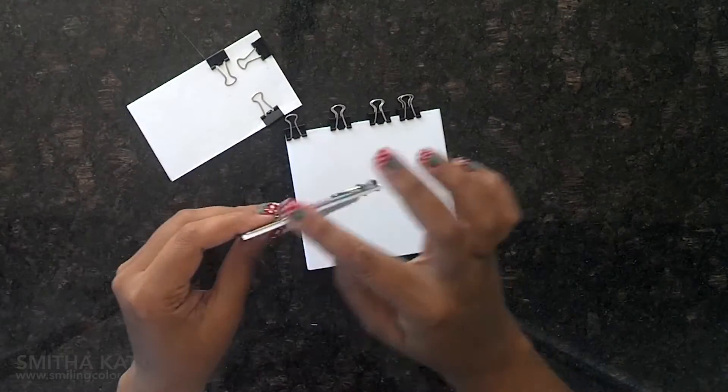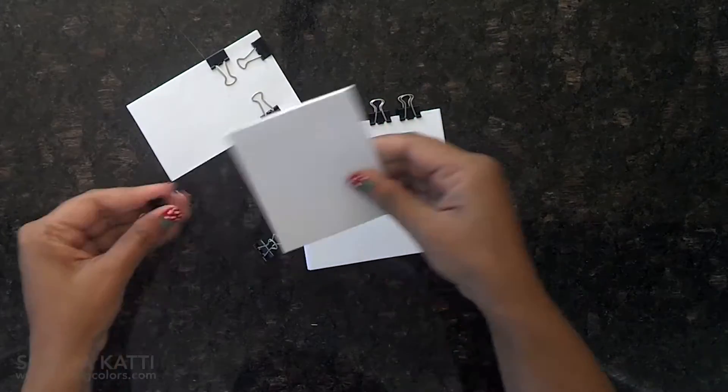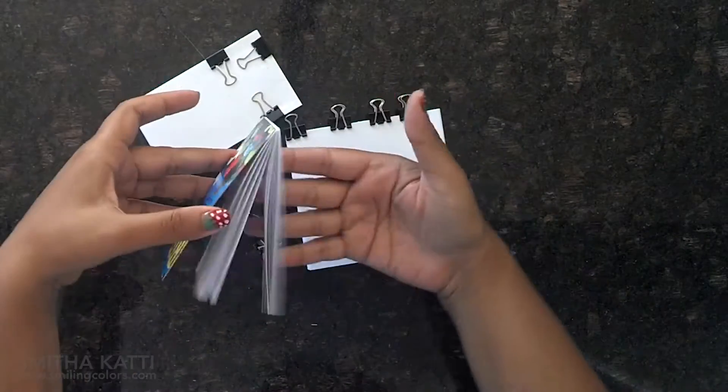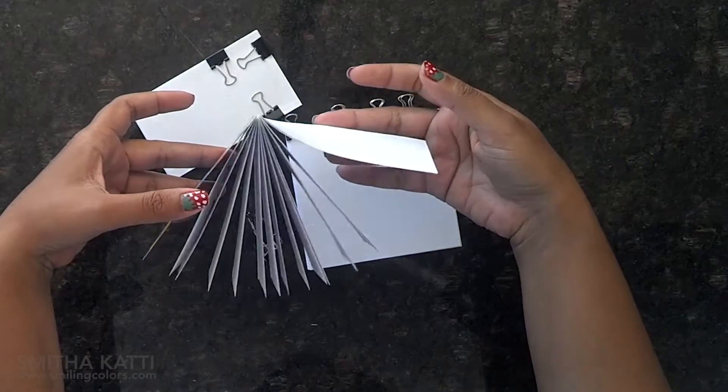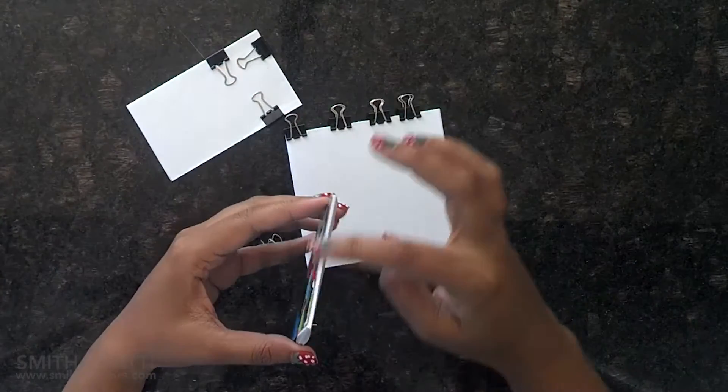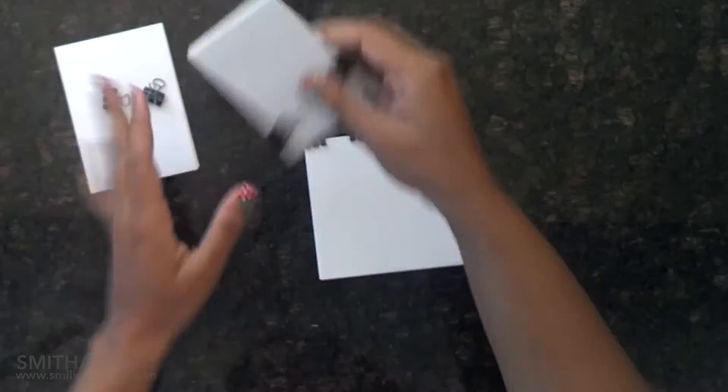After about an hour, the glue is dry to touch and you can remove the binder clips and you should have a cute notepad ready. You can cover or decorate the cereal box you use if you wish. I thought it was cute to have this as a cereal box as is.